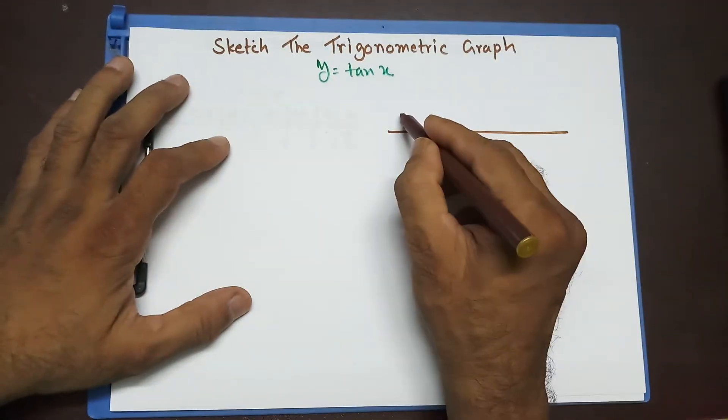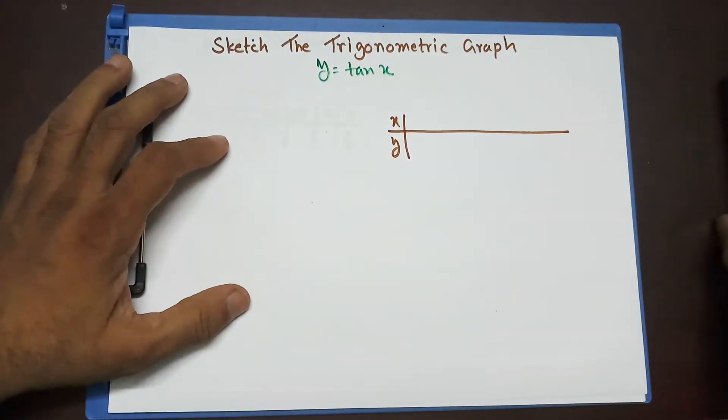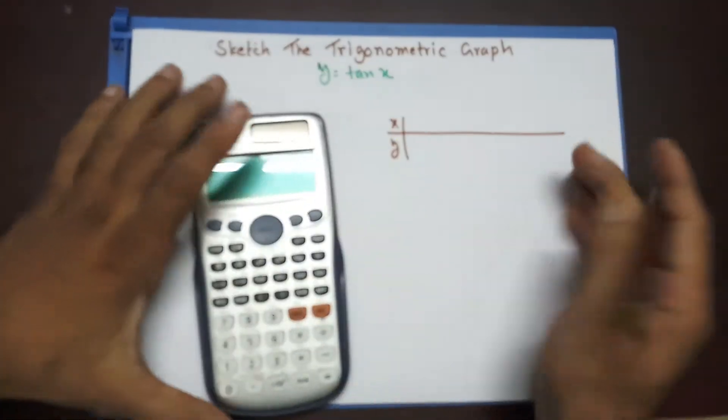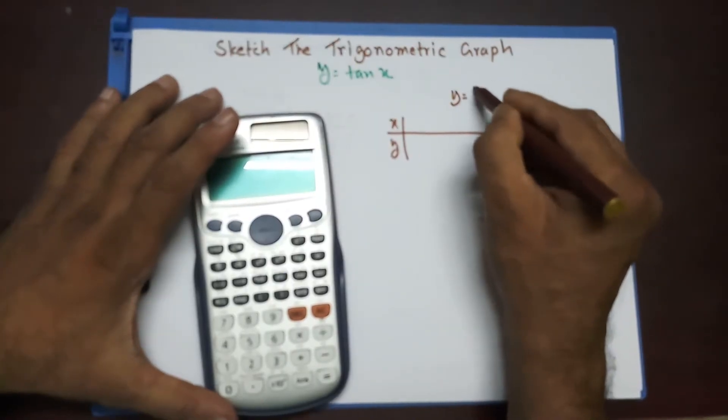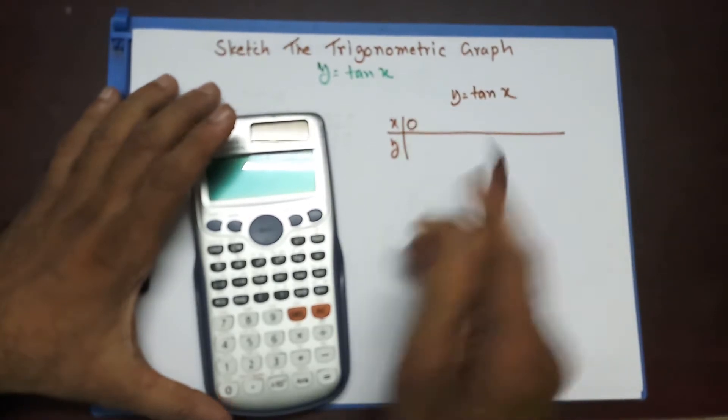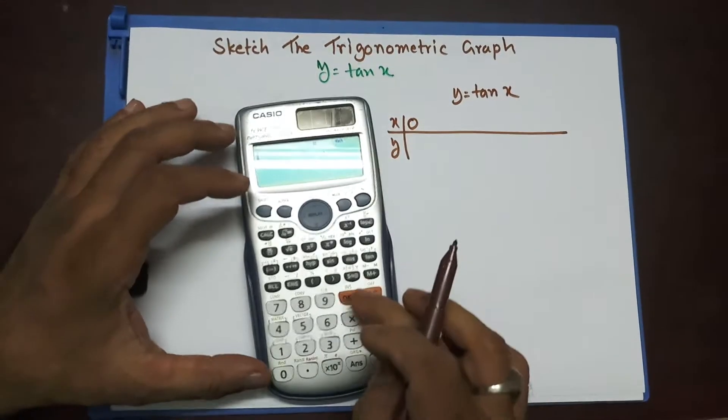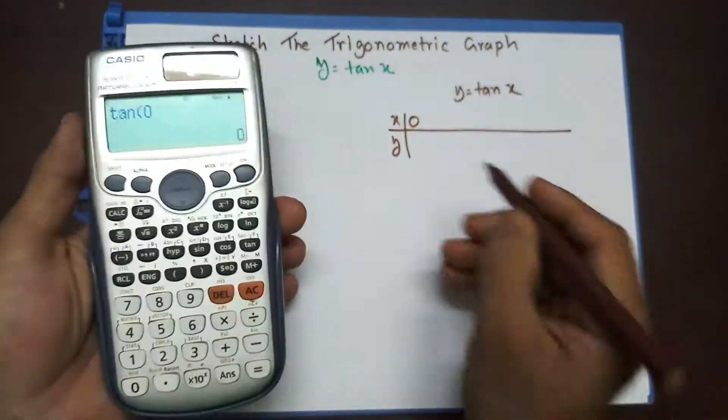Now, if I draw the table x and y, like the one we have done before, we're going to check this one. What happens if we have trigonometry graph tan x at 0 degree? Now at 0 degree, tan 0, I hope you can see that, tan 0 equal to 0. So, the value of tan 0 equal to 0.